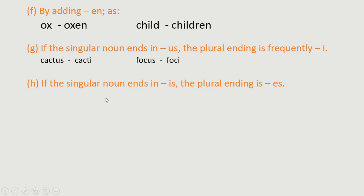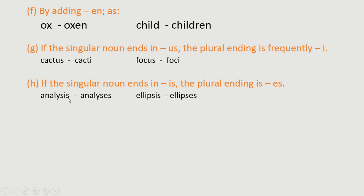Rule H: if the singular noun ends in -IS, the plural ending is -ES. So we replace -IS with -ES. For example: analysis→analyses, ellipsis→ellipses.